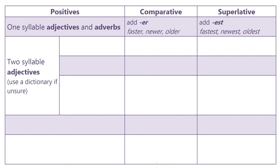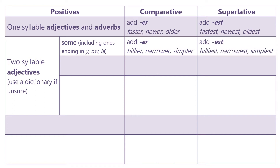For two-syllable adjectives, use a dictionary if you are unsure. For some, including ones ending in Y, OW, or LE, we add ER for the comparative: hillier, narrower, simpler. Notice for hillier, we change the Y to I. For the superlative, add EST: hilliest, narrowest, simplest.